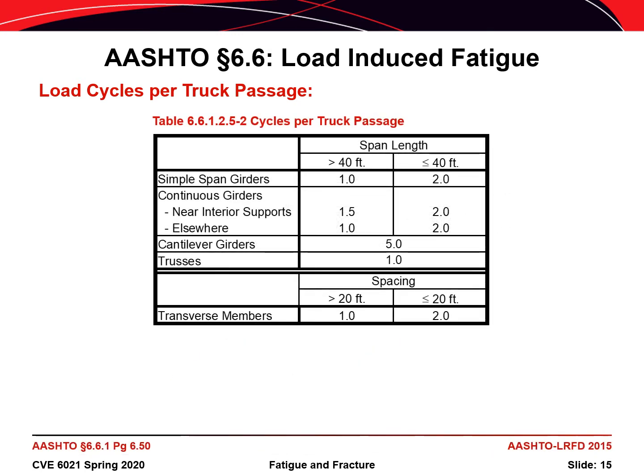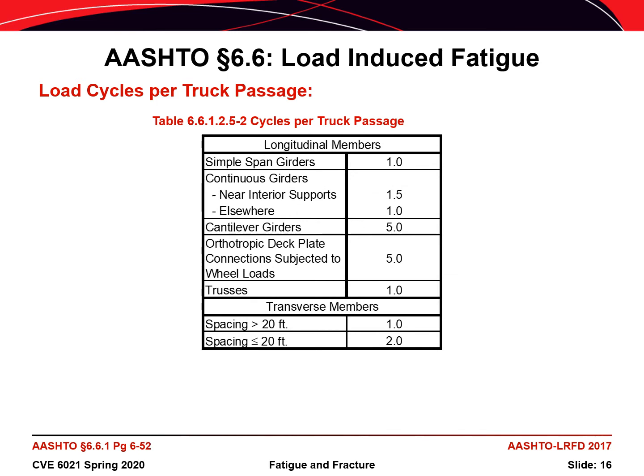A table was presented in previous editions of the AASHTO specification up through the seventh edition, which distinguished what lowercase n should be based on the span length of the structure. However, this table was simplified in the eighth edition. Now you don't have to distinguish based on span length — instead, you just look at the type of detail you're working with and determine the number of stress cycles per truck passage based on that. Note that details located within one-tenth of the span length from the support are considered to be near the support for the definitions of this value.